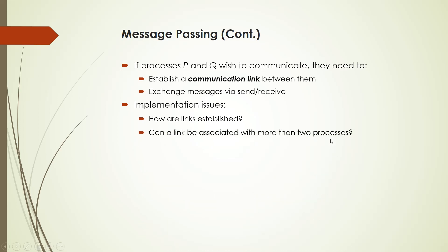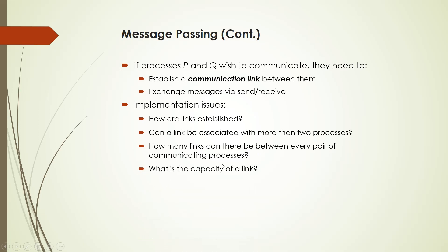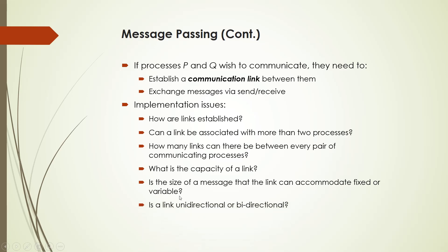Key implementation questions include: can a link be associated with more than two processes? How many links can exist between every pair of communicating processes? What is the capacity of a link? Is the message size fixed or variable? Is the link unidirectional or bidirectional? A physical link can be a system bus or network; a logical link can be direct or indirect.